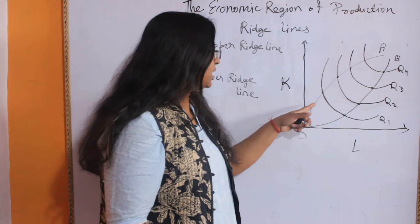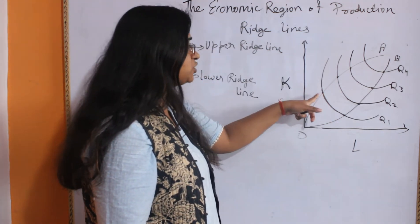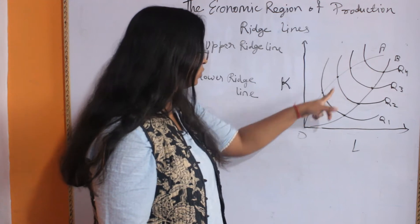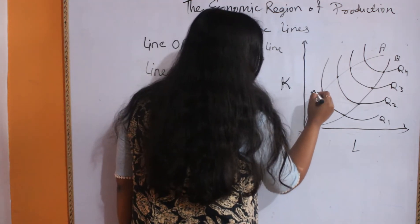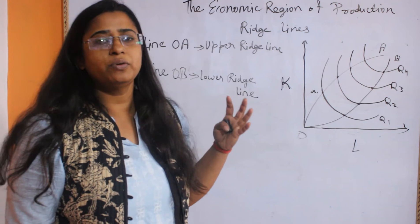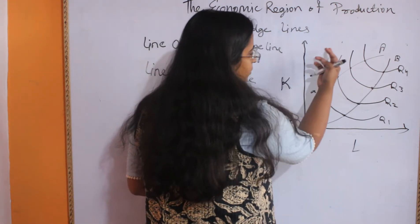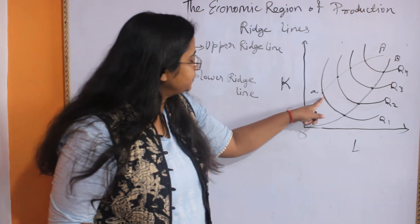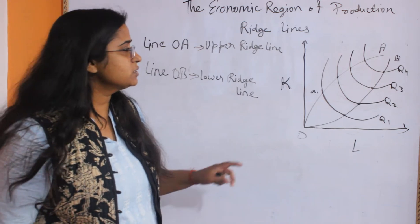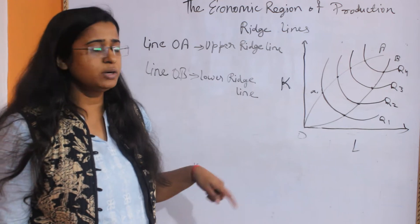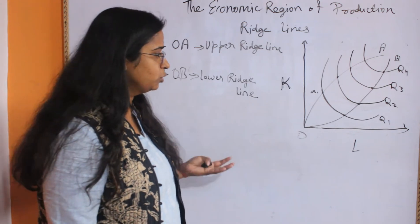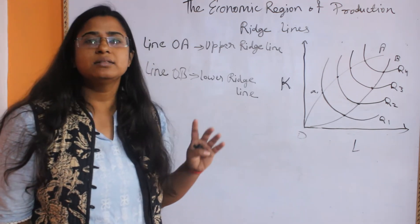You can see that the slope of the isoquant starts to become positive above this OA line, above point A1. What does that mean? It means that for producing the same amount of output, you are increasing the amount of capital and its productivity is not increasing because on a particular isoquant, the level of output is the same.